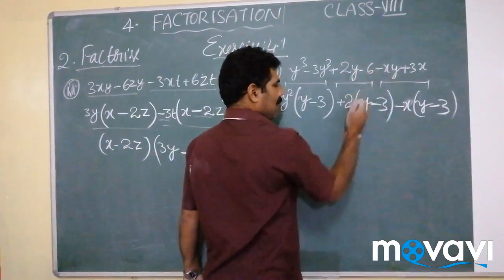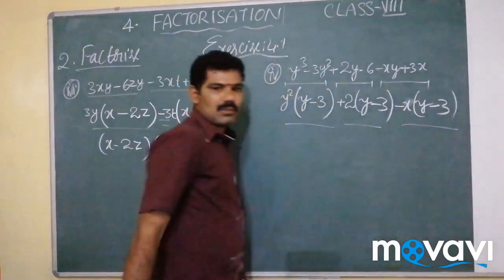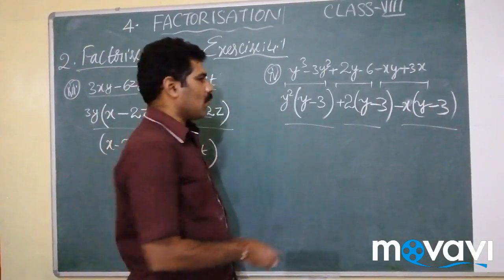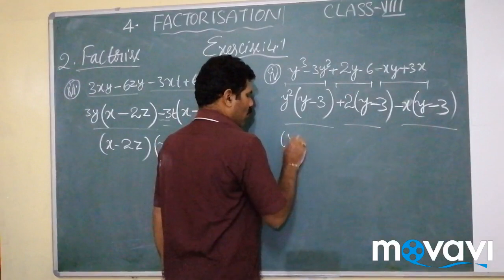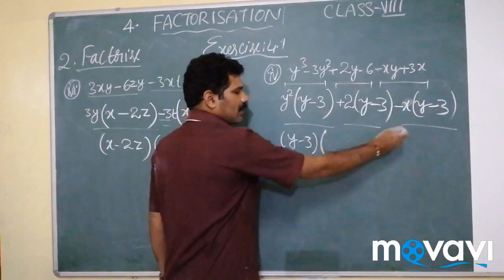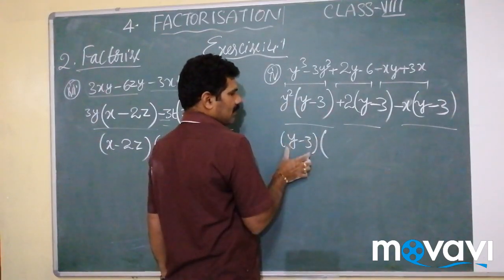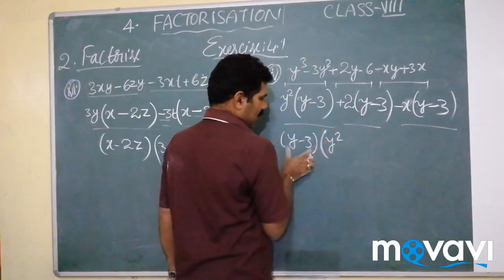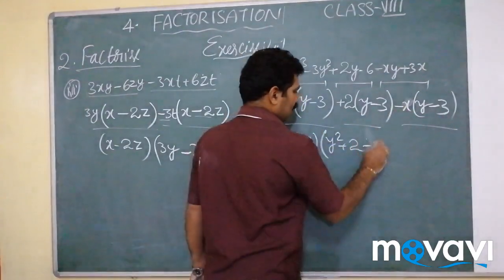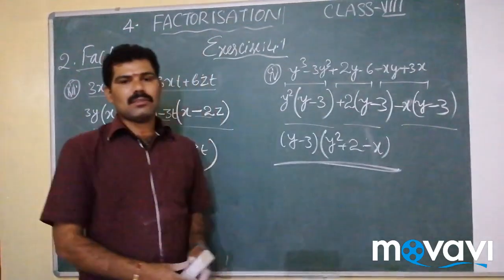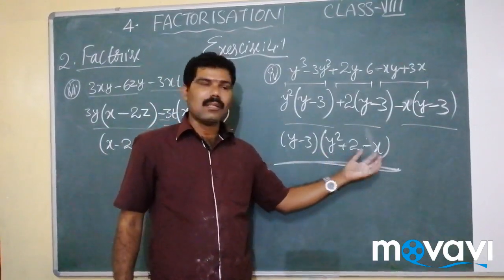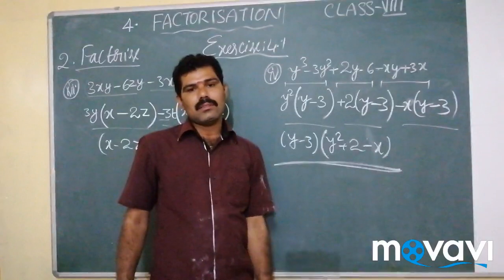The 6 terms are now converted into 3 terms, and each term has the common factor Y minus 3. Taking Y minus 3 outside as the common factor, the remaining terms are Y² from the first, plus 2 from the second, and minus X from the third. So Y minus 3 and Y² plus 2 minus X are the factors of this problem.